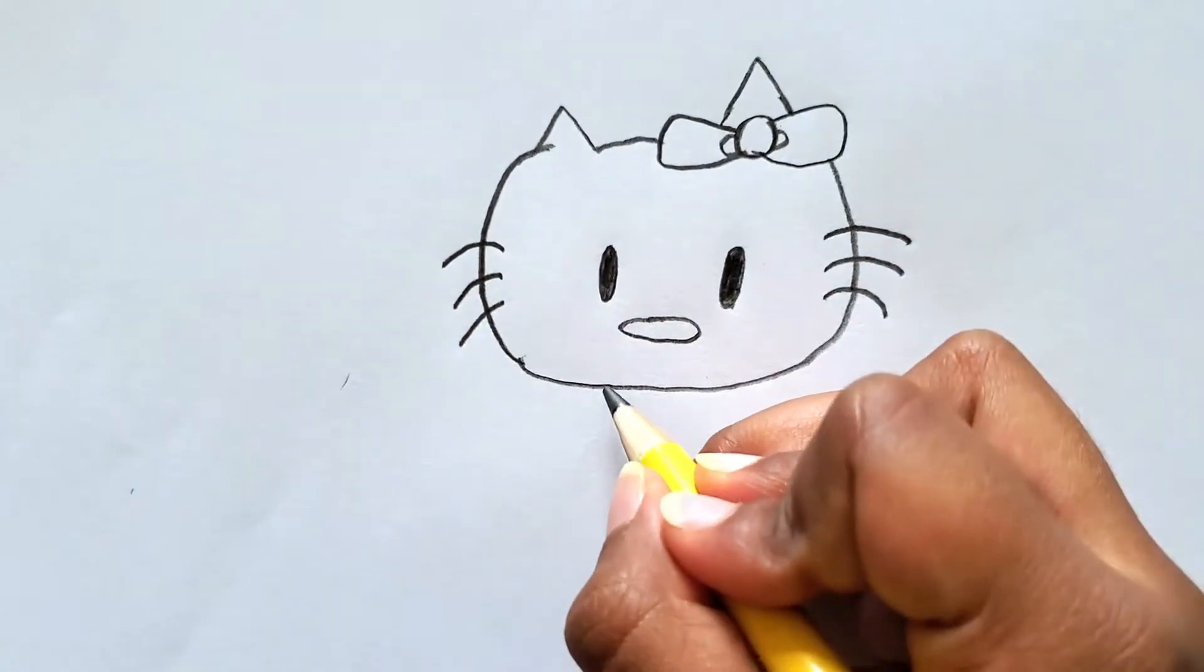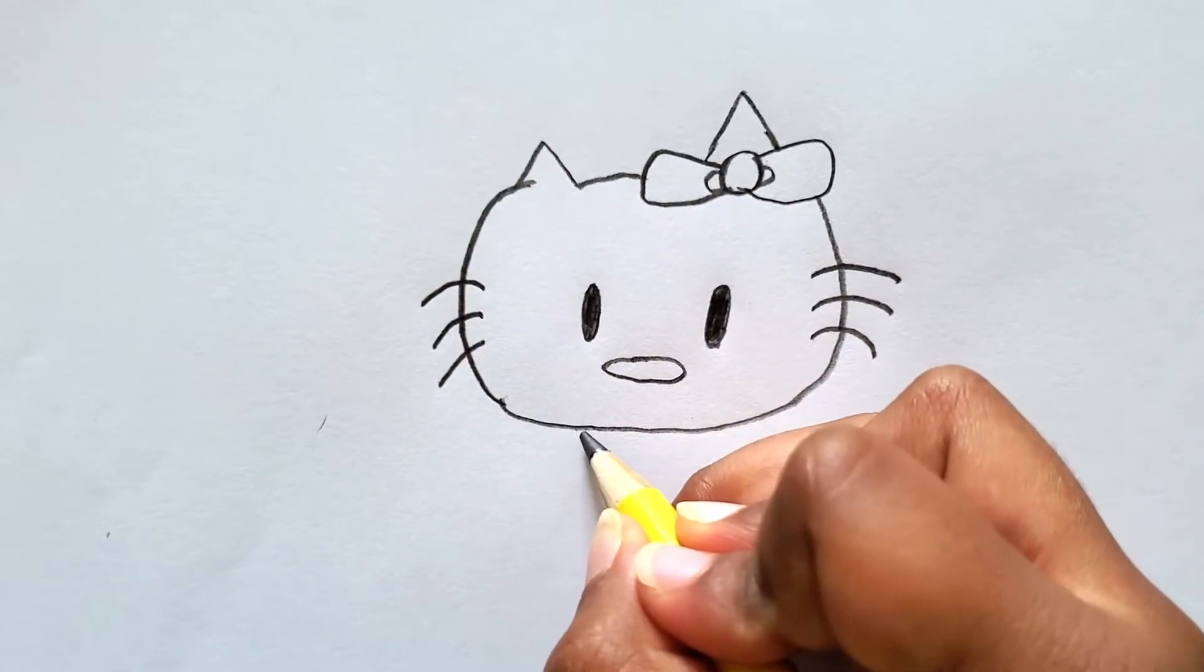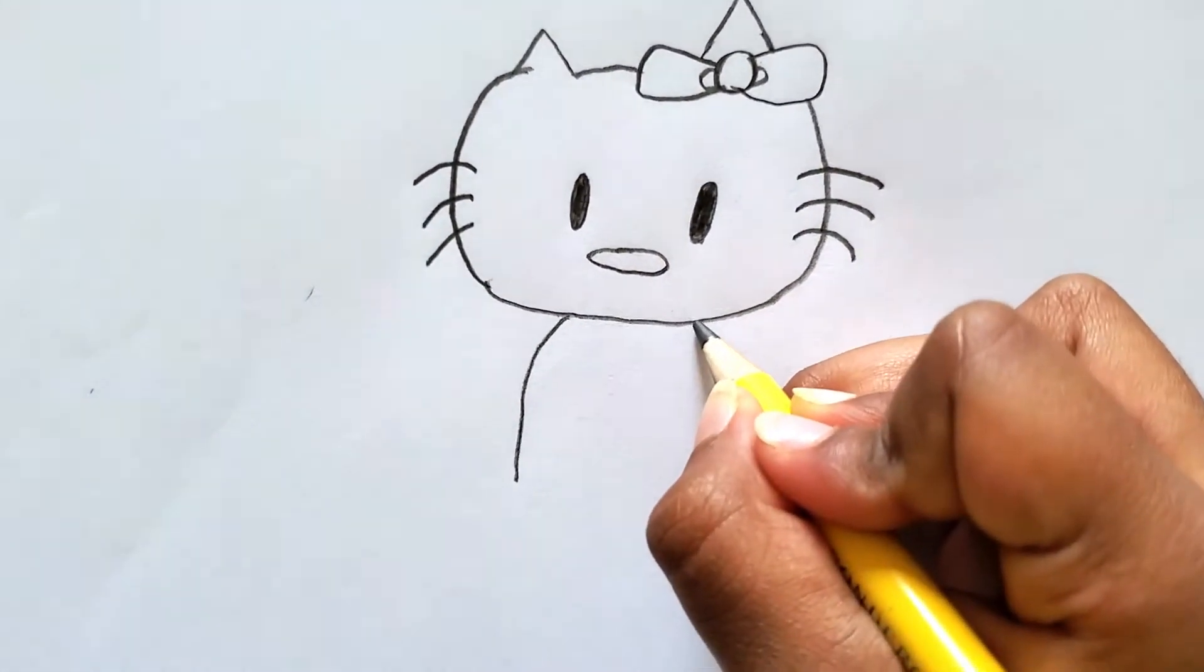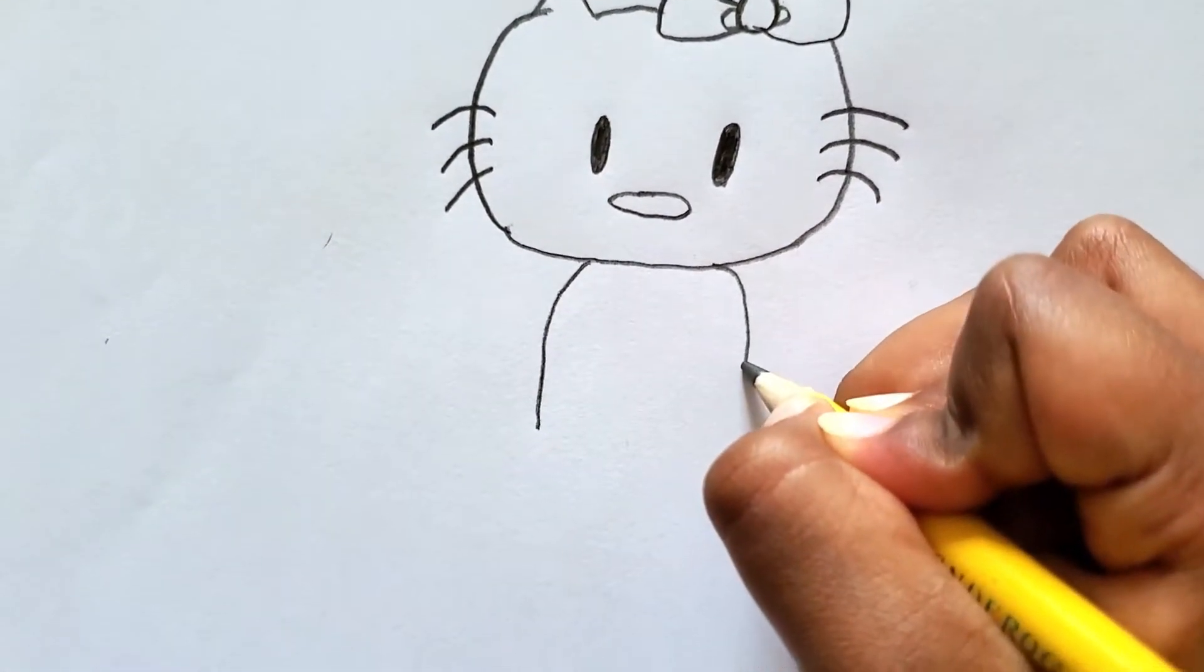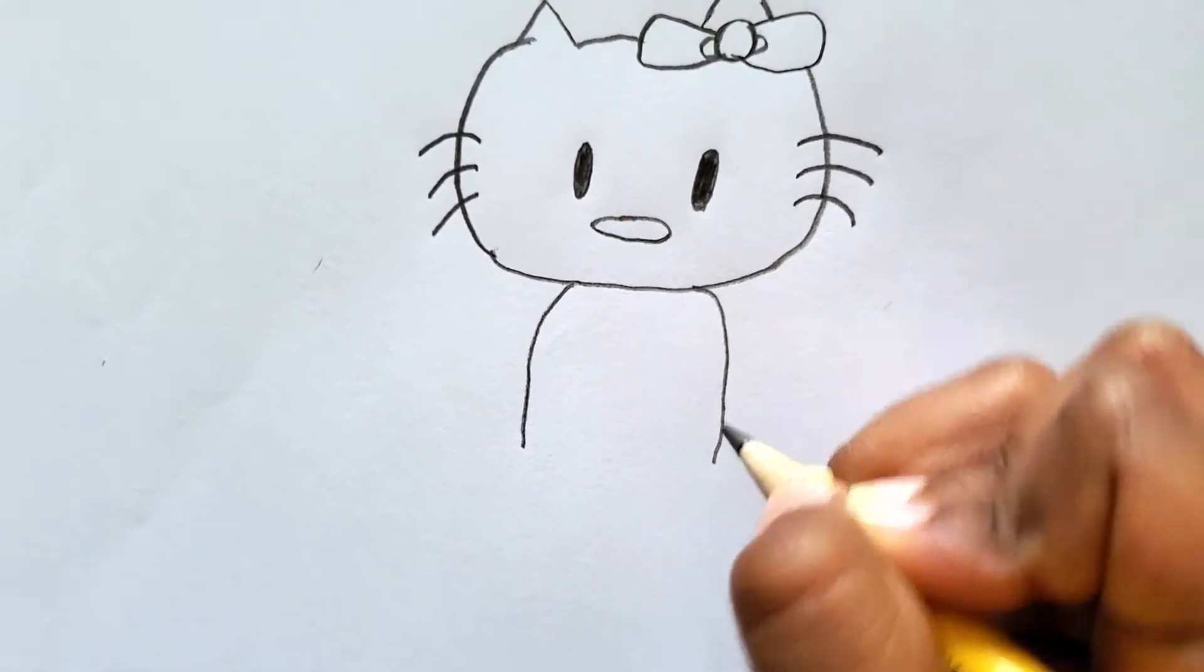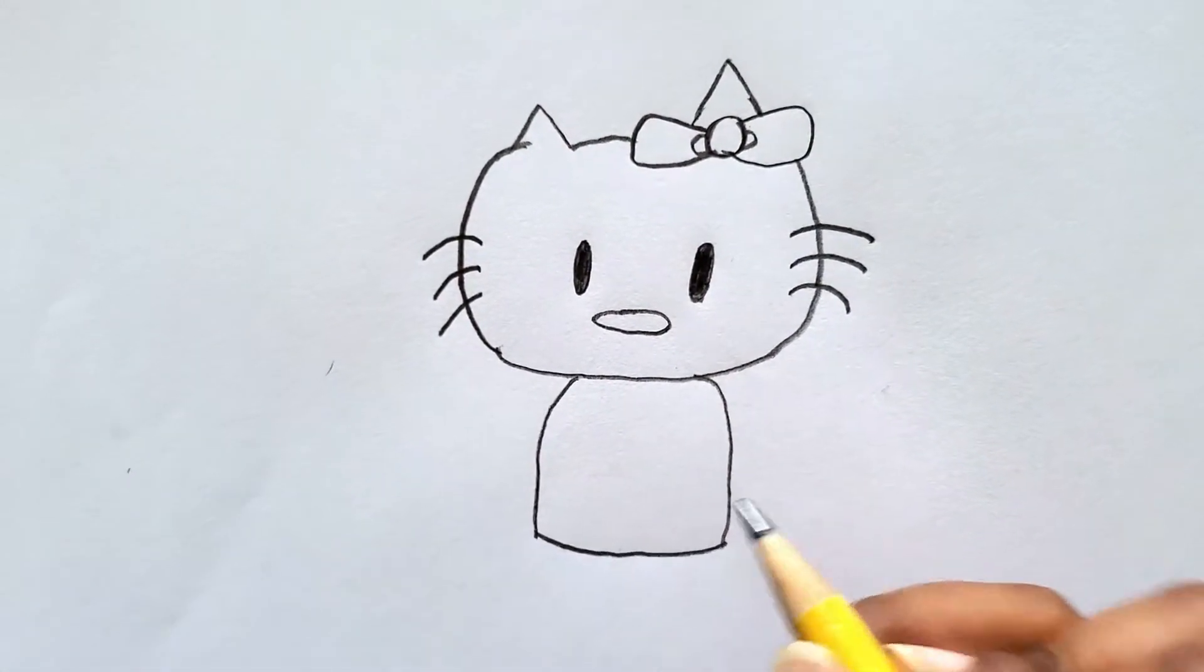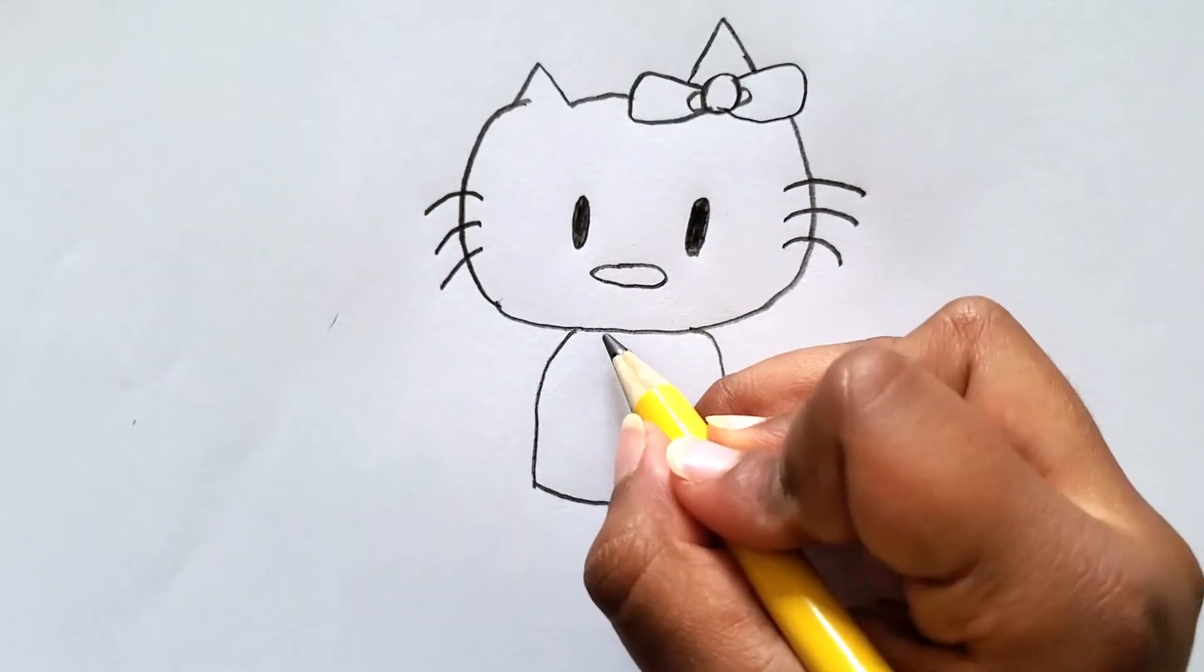And now, starting straight from her eye, draw a little curve for her dress. And from the other eye, also try to make them the same exact size and match them up. Now let's draw her neck.